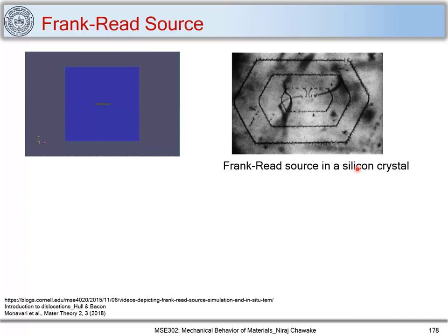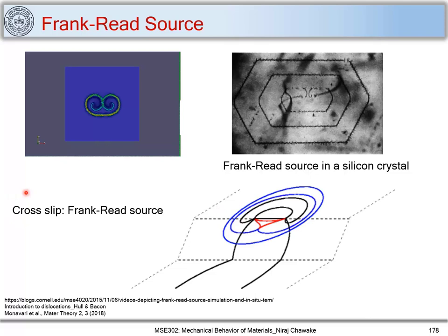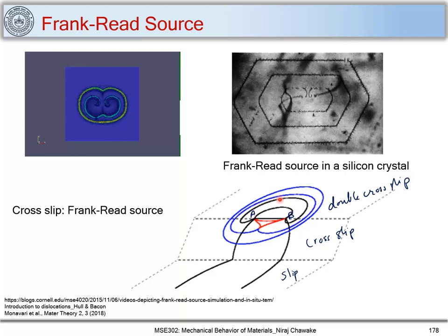There is another way a Frank-Reed source can operate, which is through cross-slip of a dislocation. A screw dislocation undergoes cross-slip and then double cross-slip, and the points A and B formed by the double cross-slip act as pinning points. Under the influence of stress these form loops, and the loops continue to form under shear stress, acting as dislocation sources. This is another mechanism by which Frank-Reed sources operate in a material.